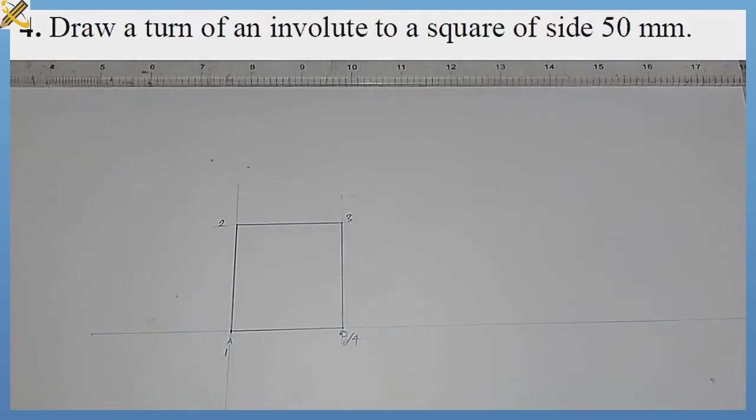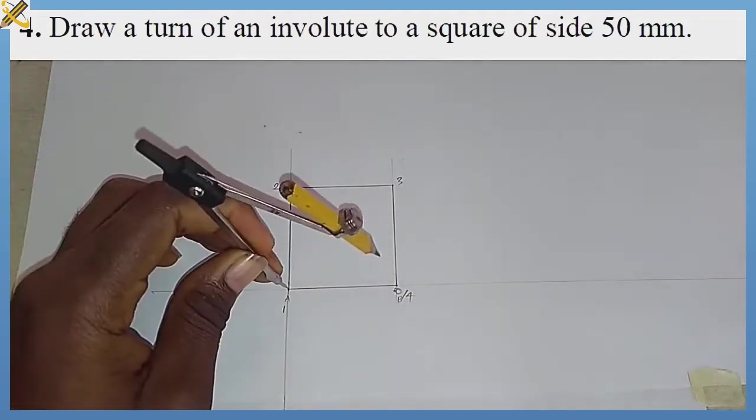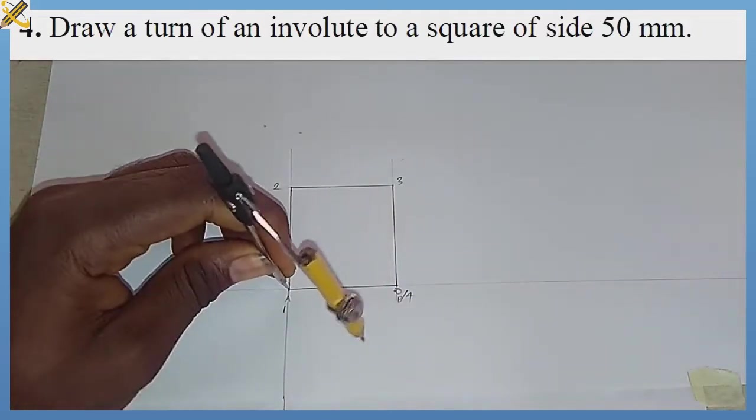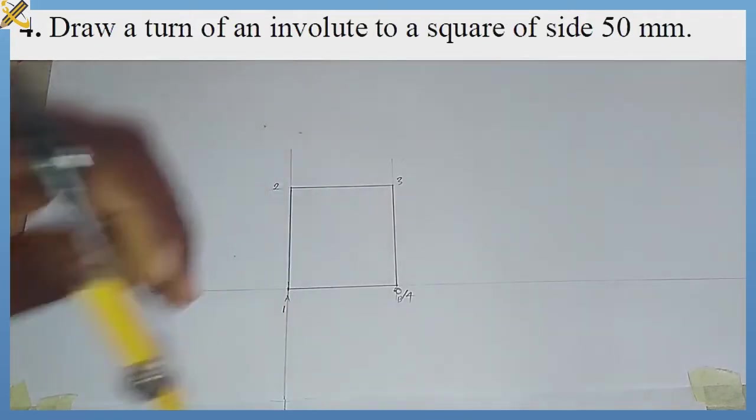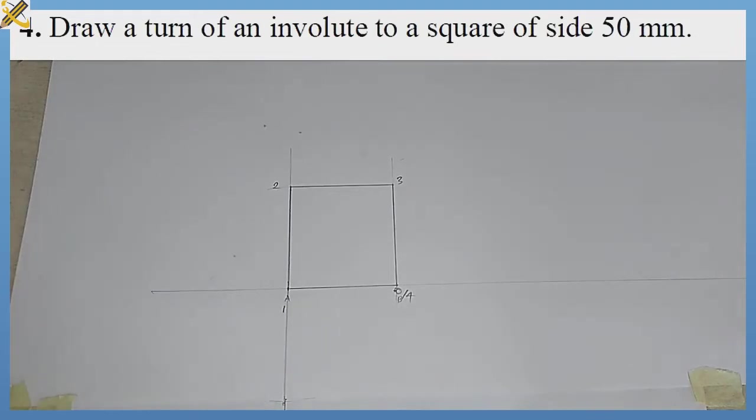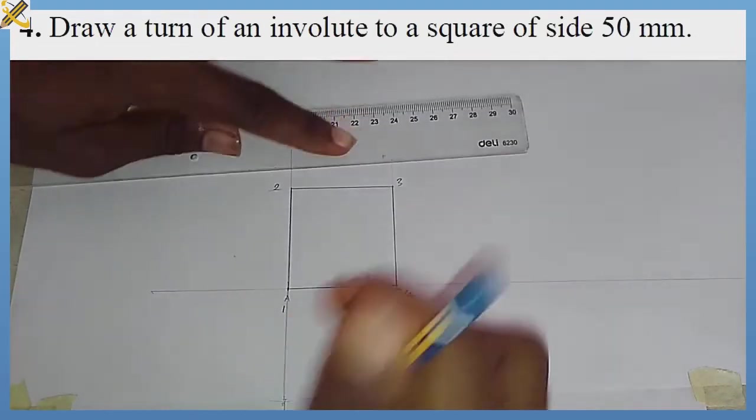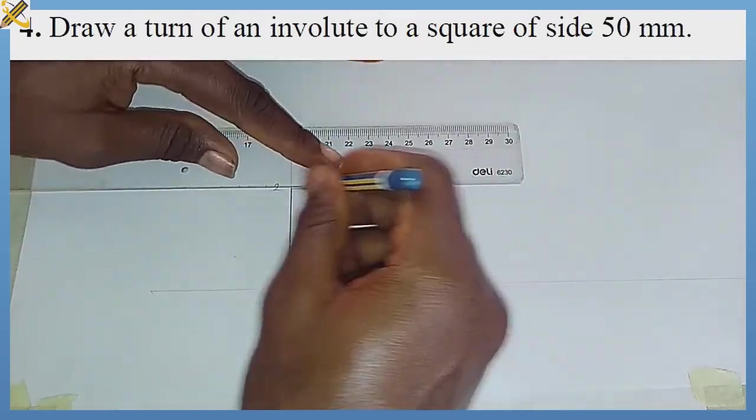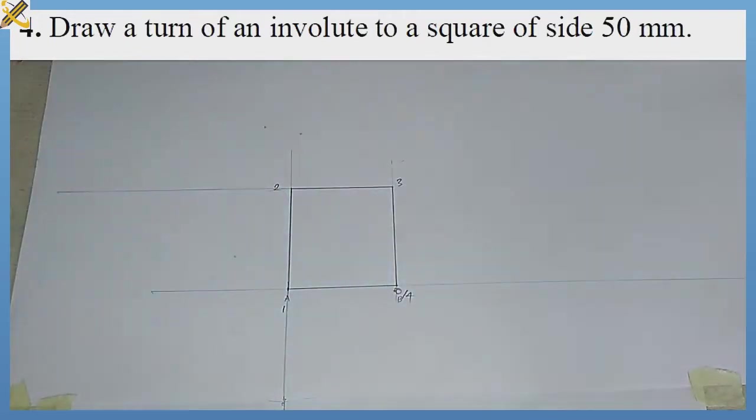With my compass at the same length 50, I come to Mark A and strike an arc on this vertical line. This is my first mark. With my compass and ruler, I rule this horizontal line and extend it further towards this area.